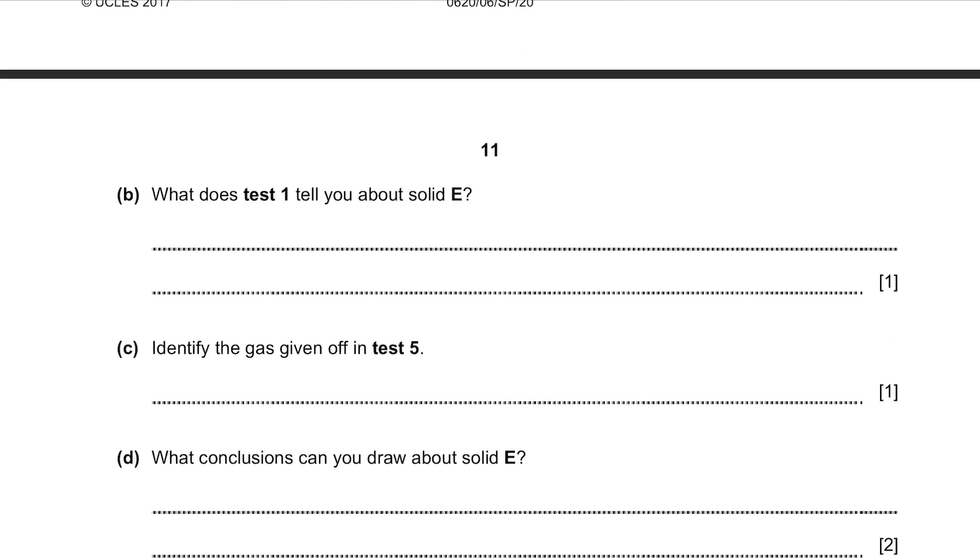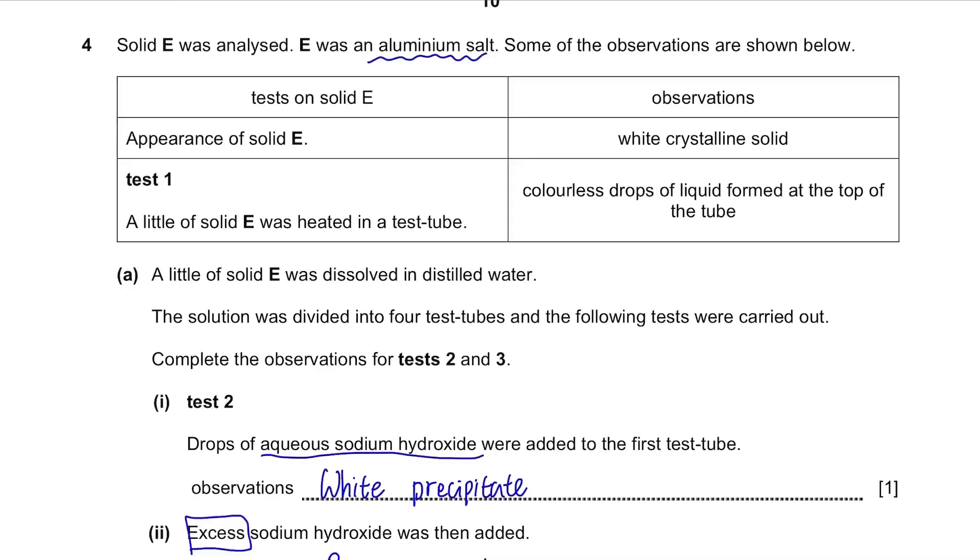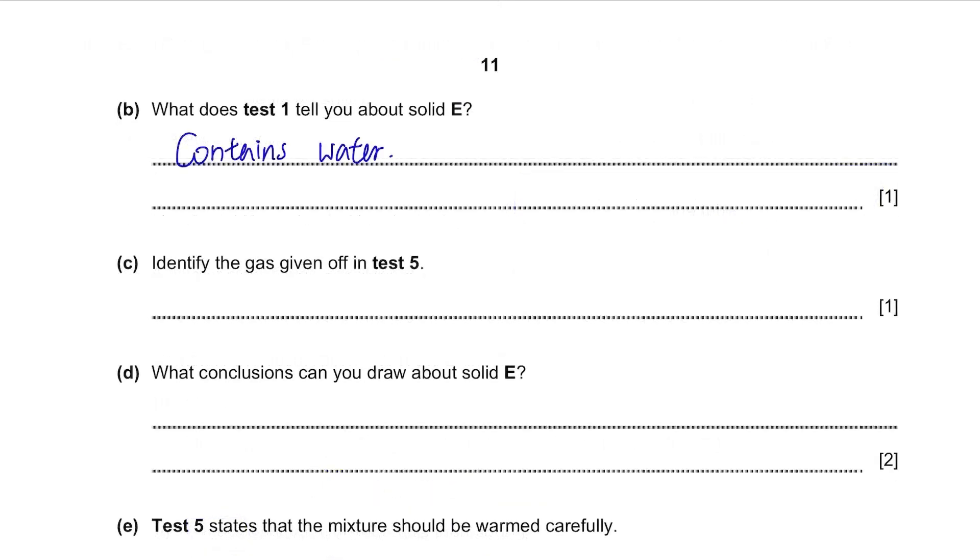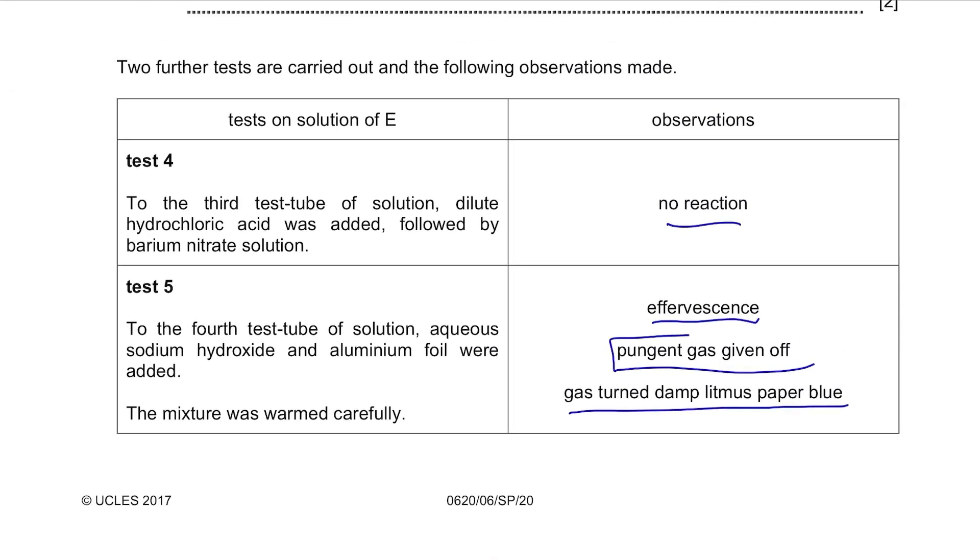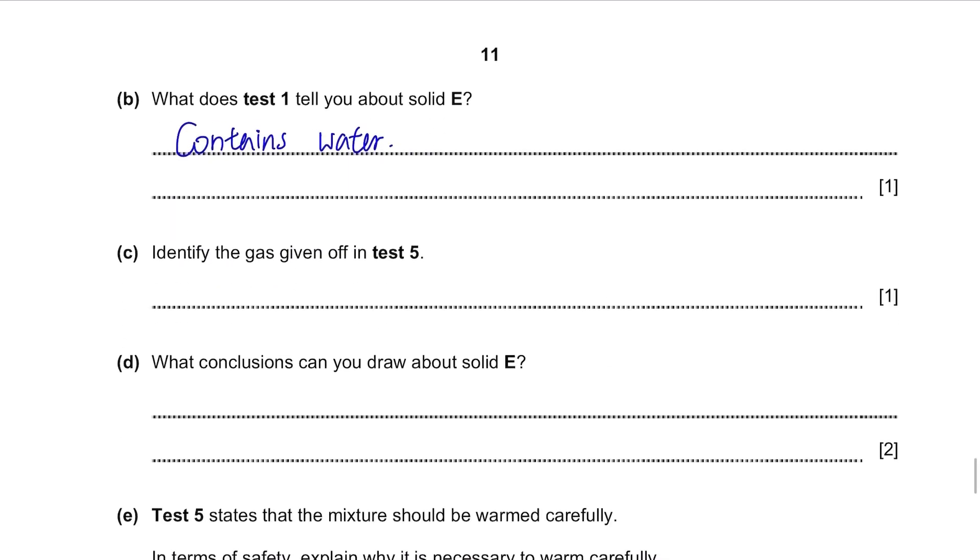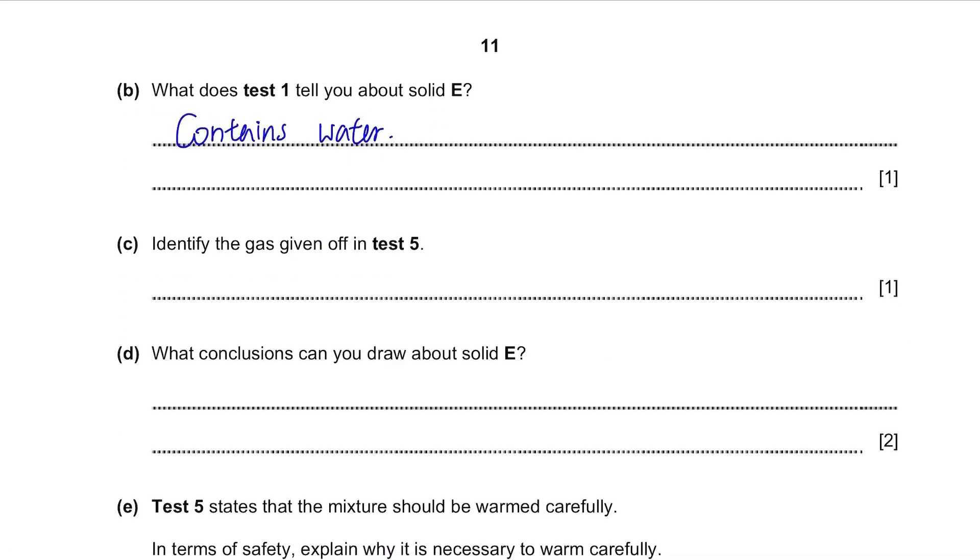Part B. What does test 1 tell you about solid E? So back to test 1 where we had colourless drops of liquid formed at the top of the tube. This is simple, it's because it contained water and it's actually water droplets formed. Part C. Identify the gas given off in test 5. Test 5 is where we had a pungent gas. If they mentioned the word pungent, there's only one answer for it. It's ammonia. Be careful, it's not ammonium but just ammonia.